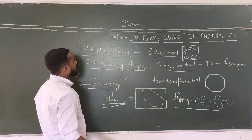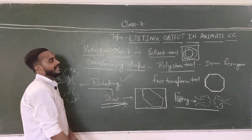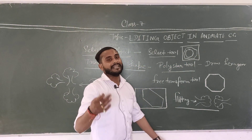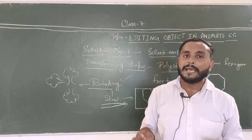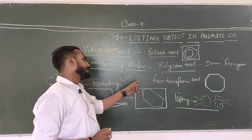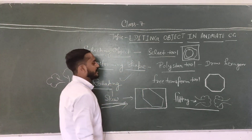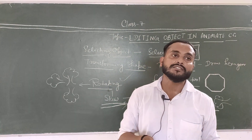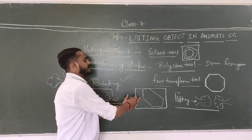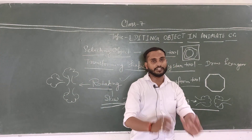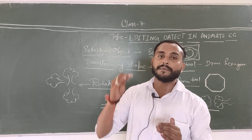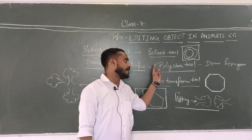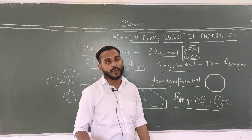So today's topics are complete. Selection Tool से आप किसी भी object को select कर सकते हो। Polystar Tool की help से hexagon, pentagon और उस type के shapes draw कर सकते हो। Free Transform Tool से किसी भी shape को किसी भी angle पर transform, skew, increase, या decrease कर सकते हो — यानी किसी भी angle से properly manage कर सकते हो। Now students, watch my video clip very carefully, and if you have any doubt you can ask me.